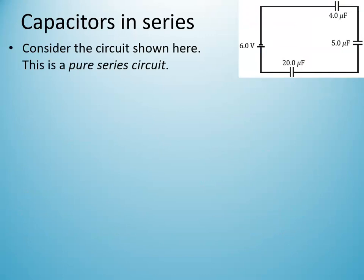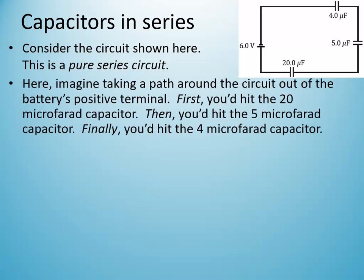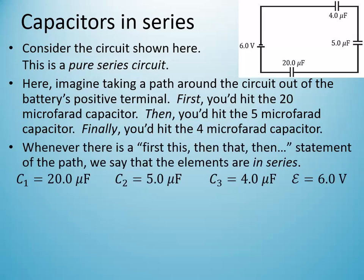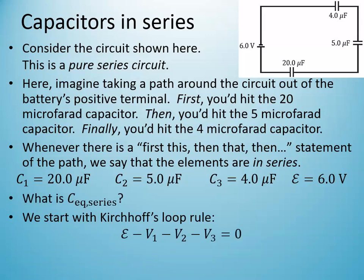What about capacitors in series? In a pure series circuit, the charge goes through each capacitor in sequence. Applying Kirchhoff's loop rule: script E − V₁ − V₂ − V₃ = 0. Unlike parallel, each capacitor may have a different voltage drop, but there's only one loop. The wires connecting the capacitors are neutral.